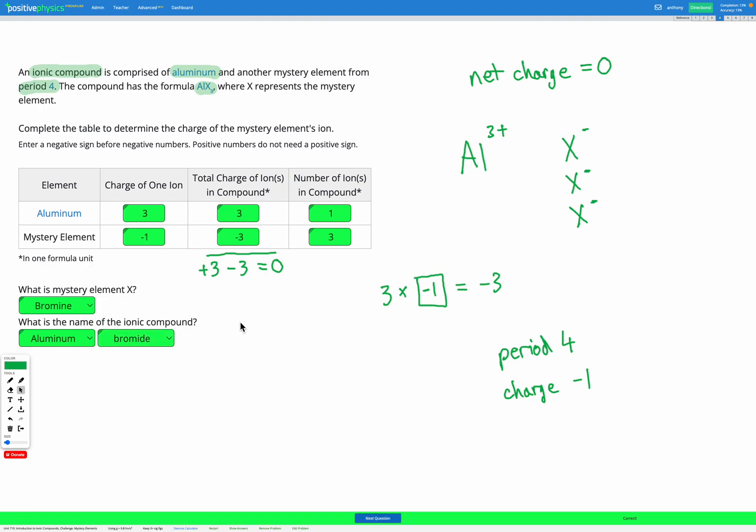So on these questions, we're doing the same technique we've done before, but we're given the formula and we work backwards to figure out the charge of our mystery element. And then we can use that to know the group of our mystery element. And with the period from the question, we can find the identity of a mystery element and the name of the ionic compound.